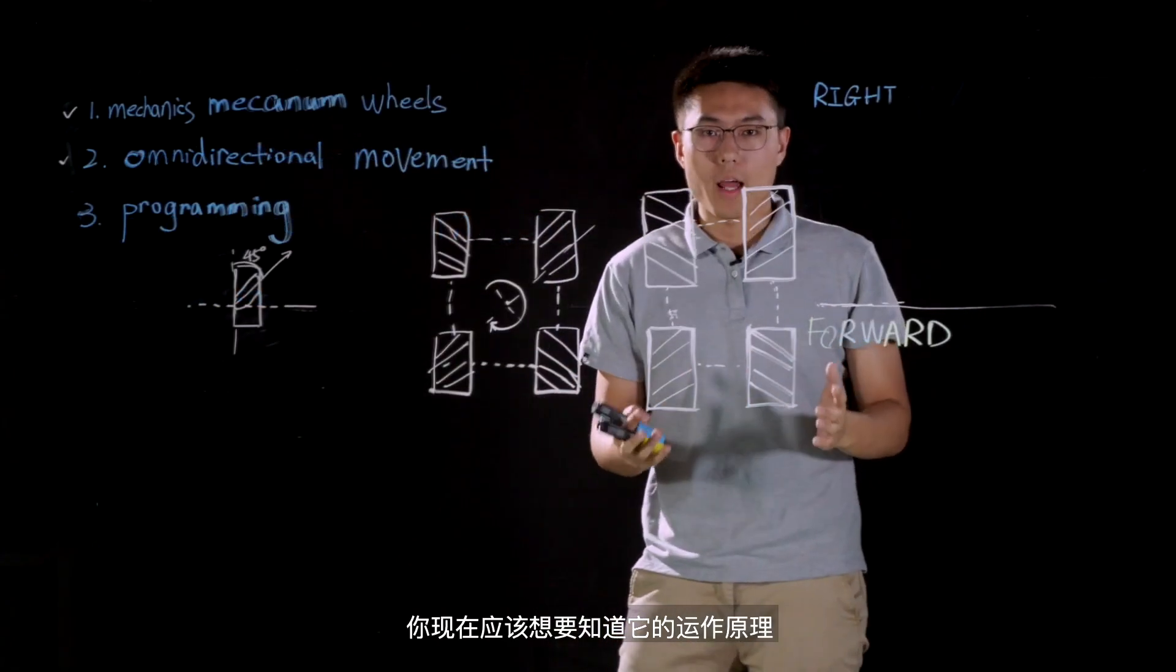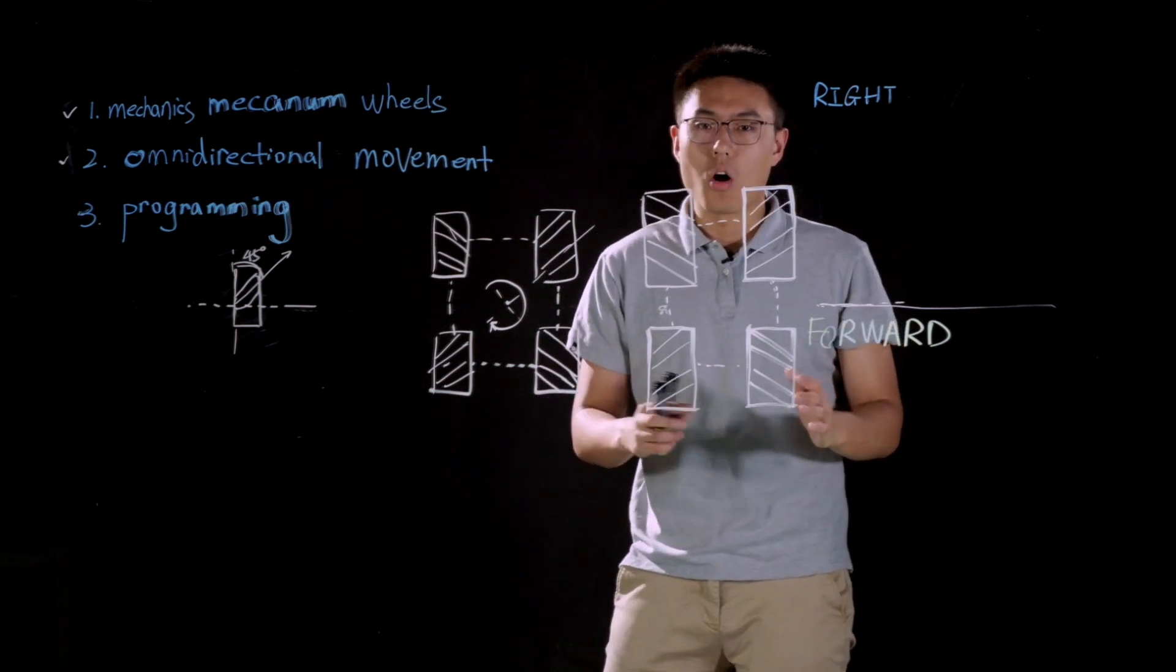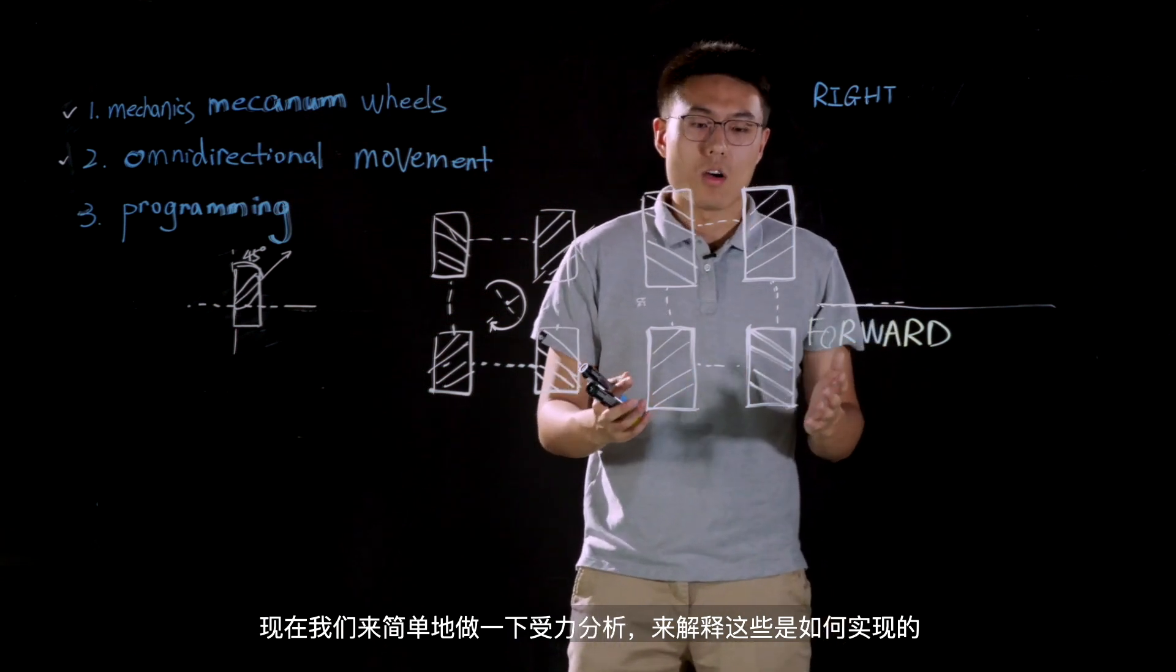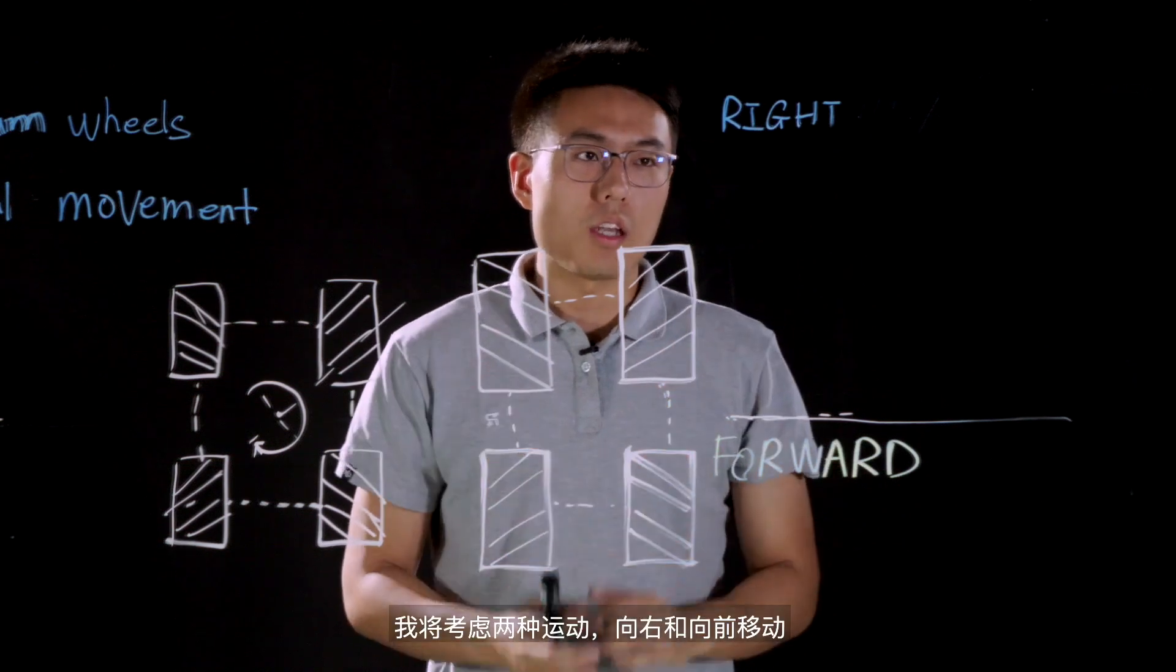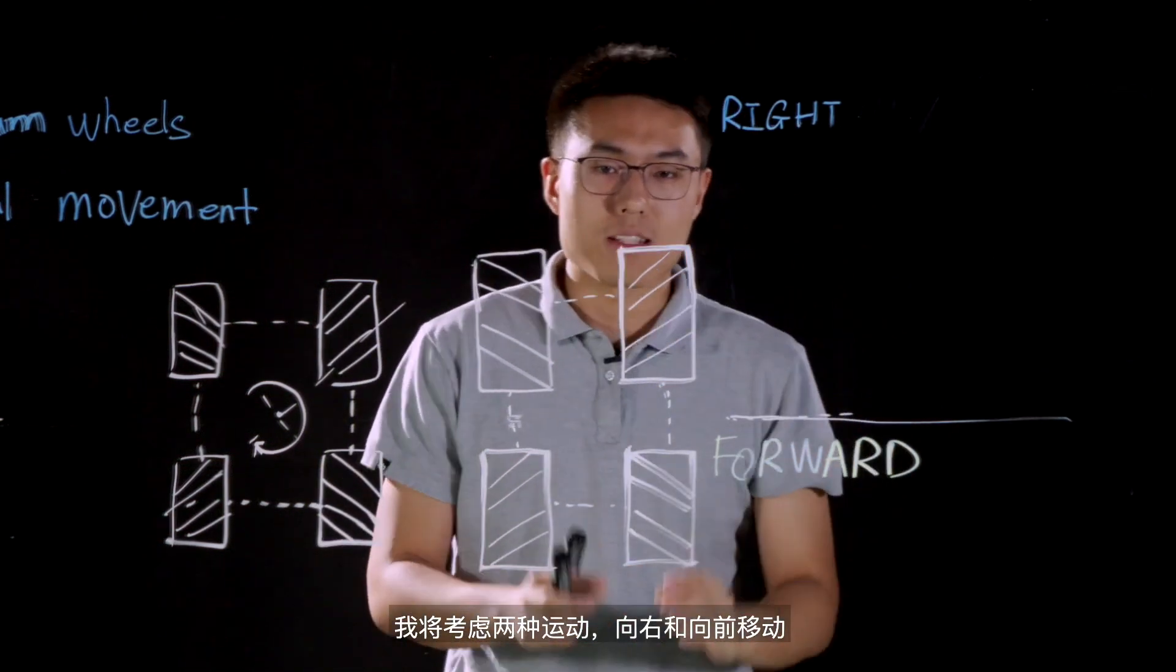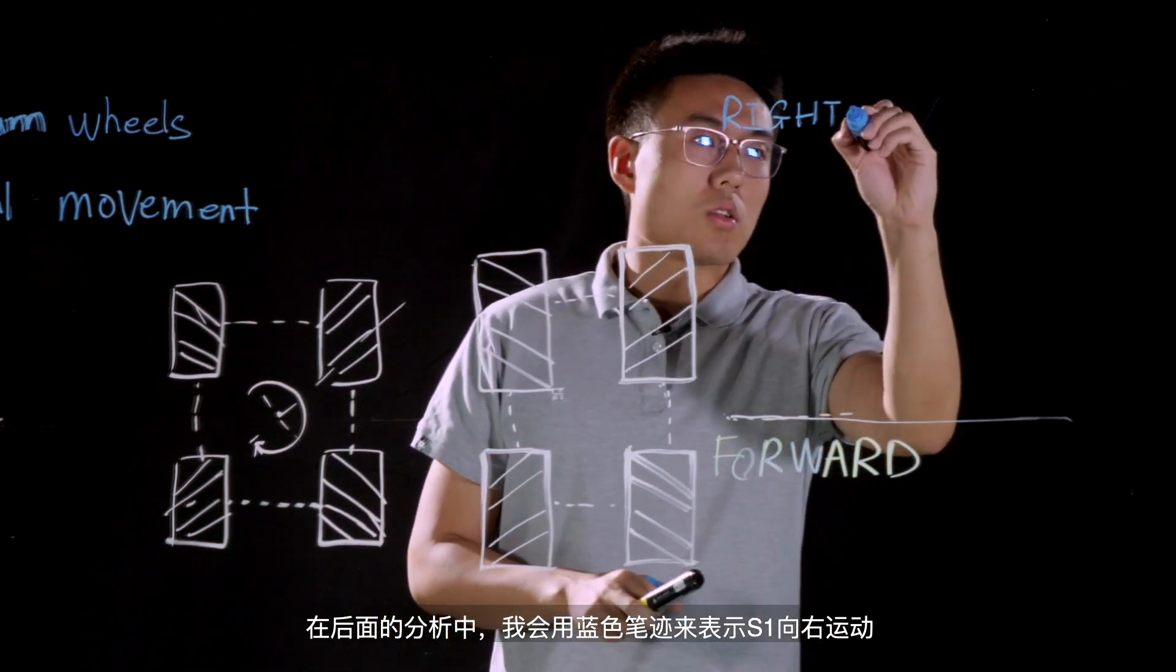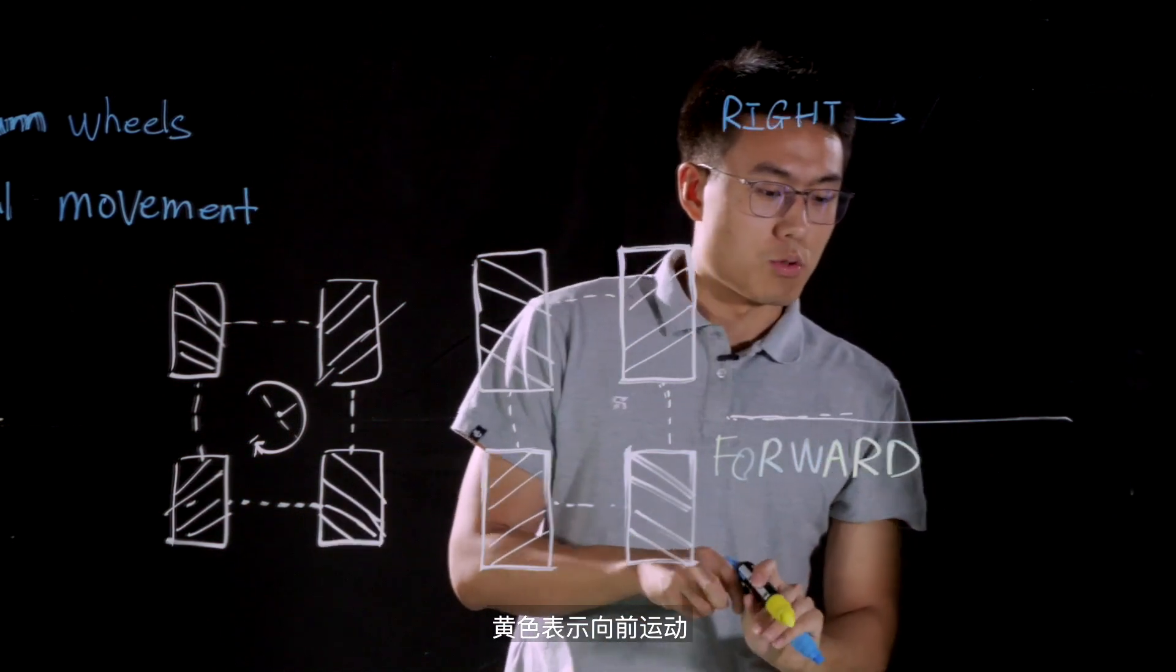Now, you may wonder how it is done. Actually, it is super easy. All we need to do is to do some very simple force analysis on each wheel, when S1 is in different kinds of motion. Here, I will take moving in right direction and moving forward as two cases. And in the following analysis, I will use blue to represent right, and use yellow to represent moving forward.